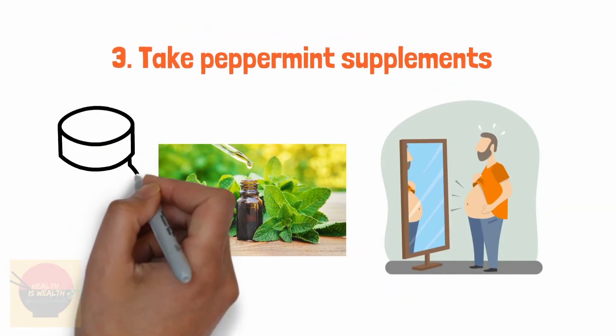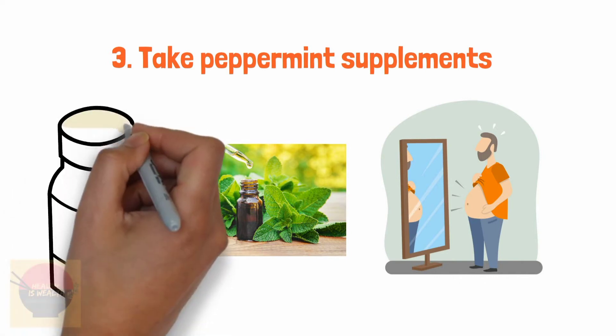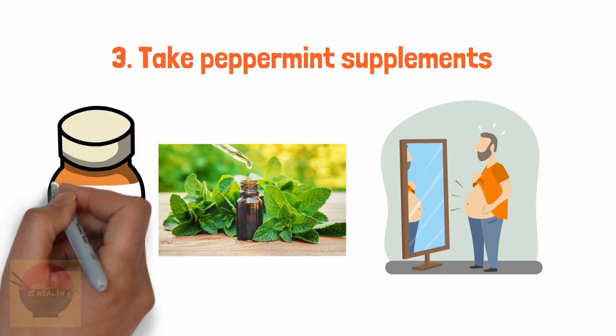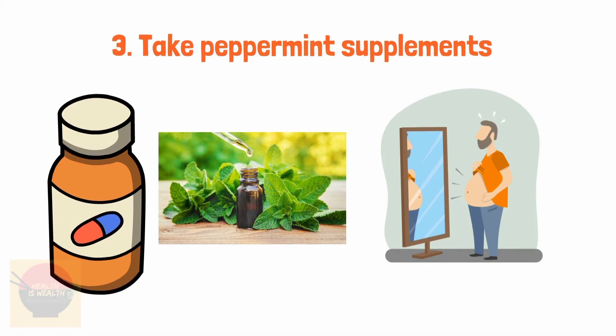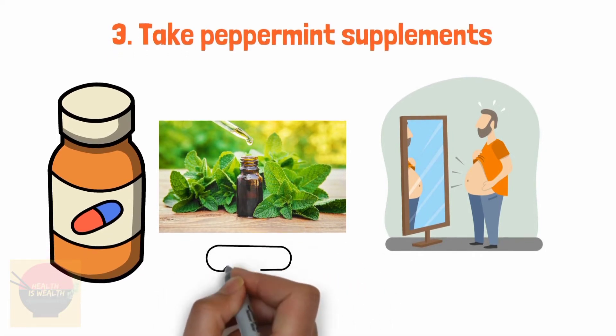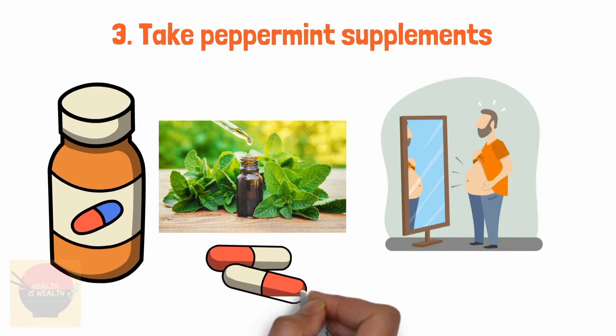Always choose enteric-coated capsules. Uncoated capsules may dissolve too quickly in the digestive tract, which can lead to heartburn. Peppermint inhibits the absorption of iron, so these capsules should not be taken with iron supplements or by people who have anemia.